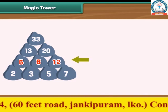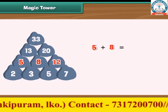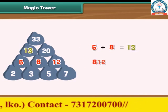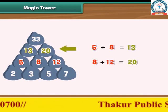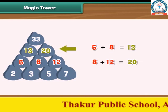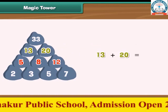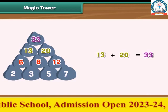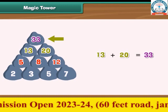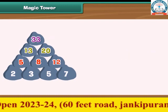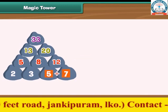Taking the stones of the second row: 5 plus 8 is equal to 13; 8 plus 12 equals 20. So 13 and 20 form the row above. Then 13 plus 20 is equal to 33, which forms the topmost row. The pattern is clear: every stone starting from the second row is the sum of the two stones beneath it.